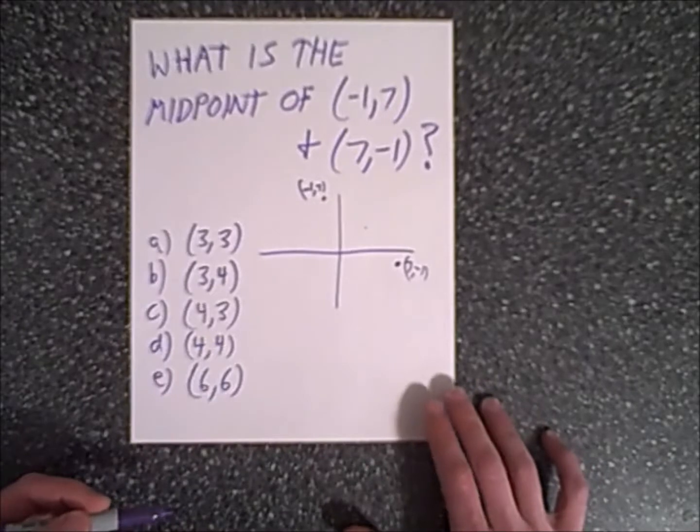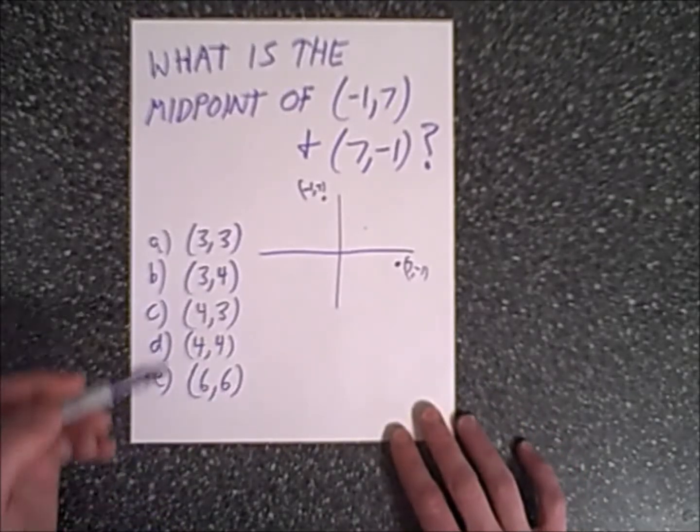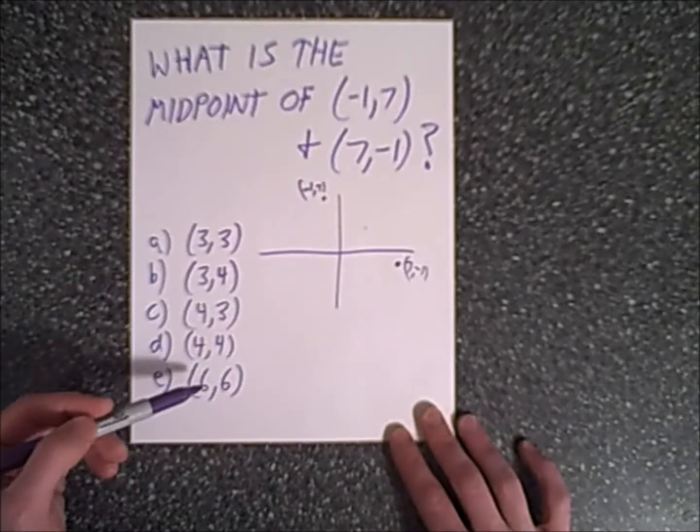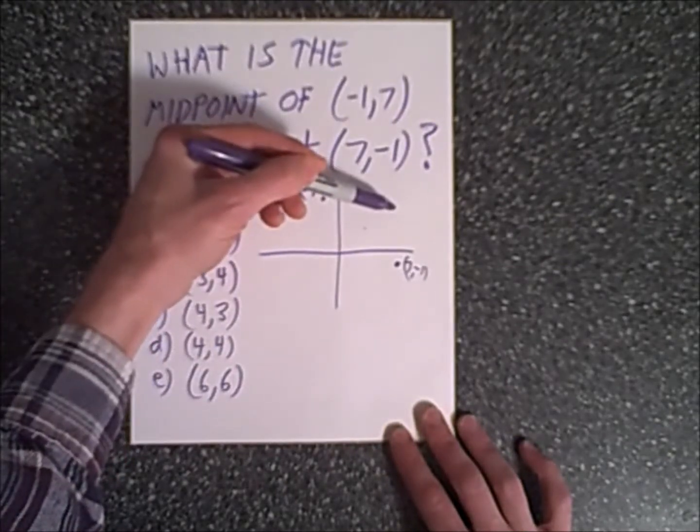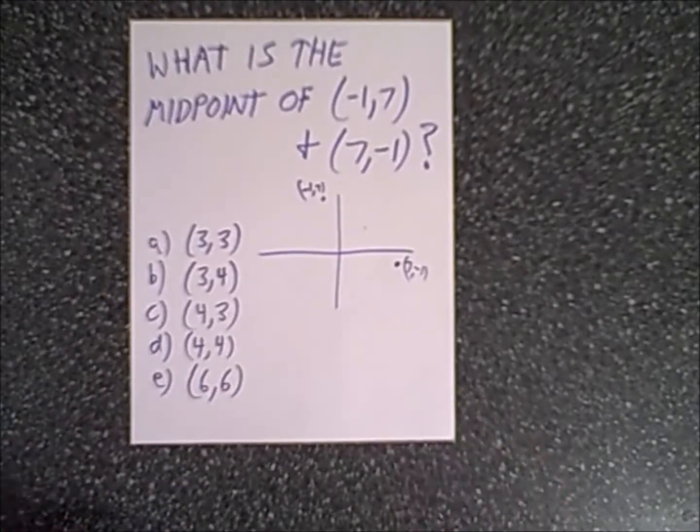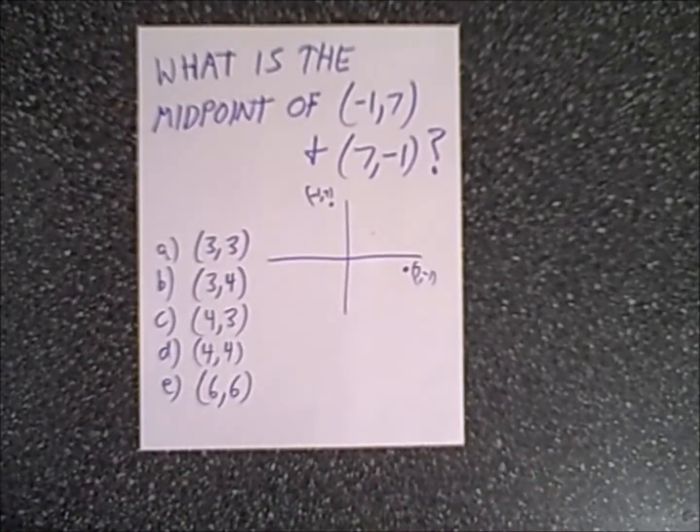That helps us in the sense that these four seem to be in the middle here. Six, six is over here, which doesn't look like the midpoint, so I doubt E will be one of our answers. Let's go ahead and solve this.